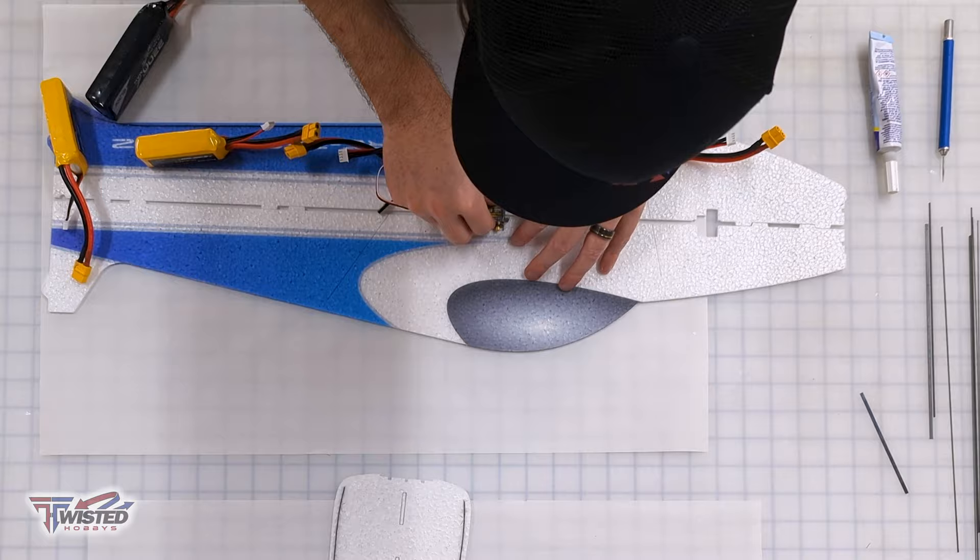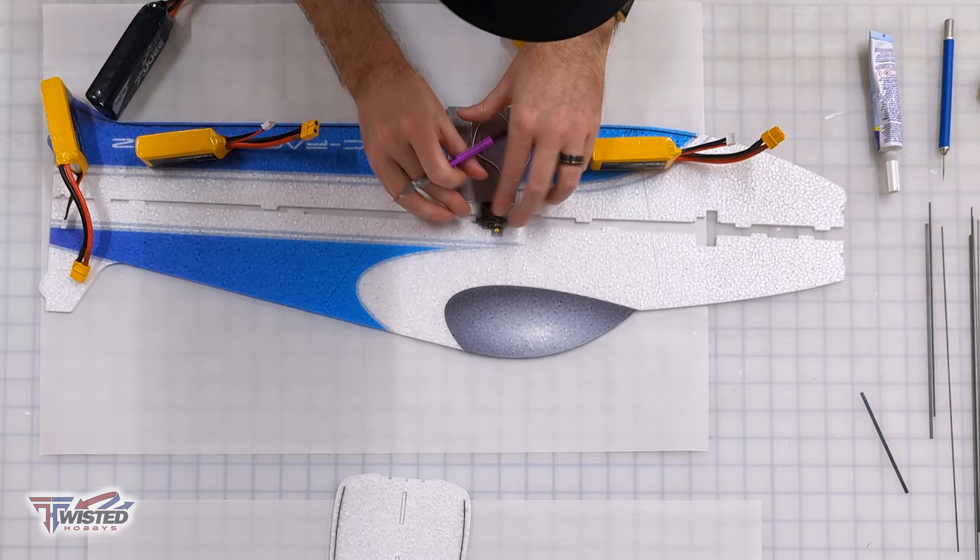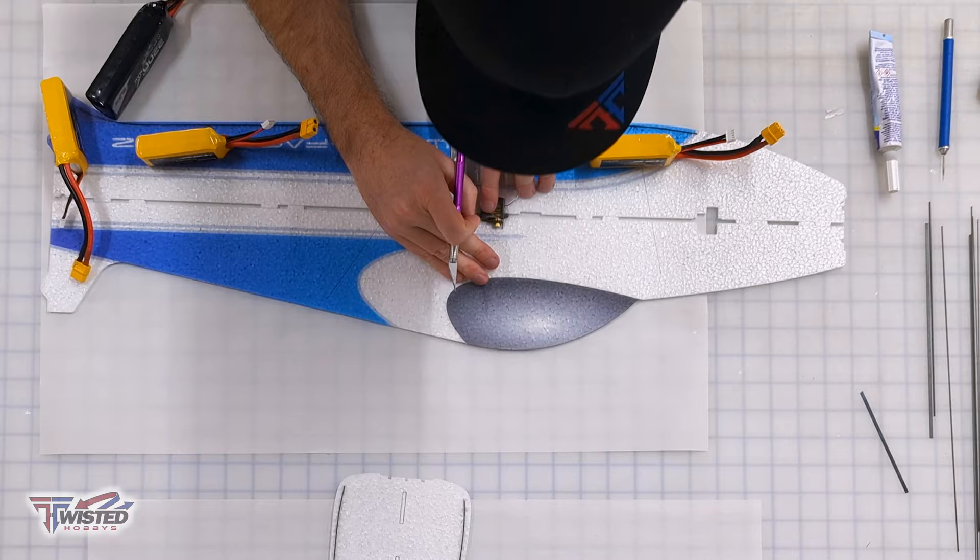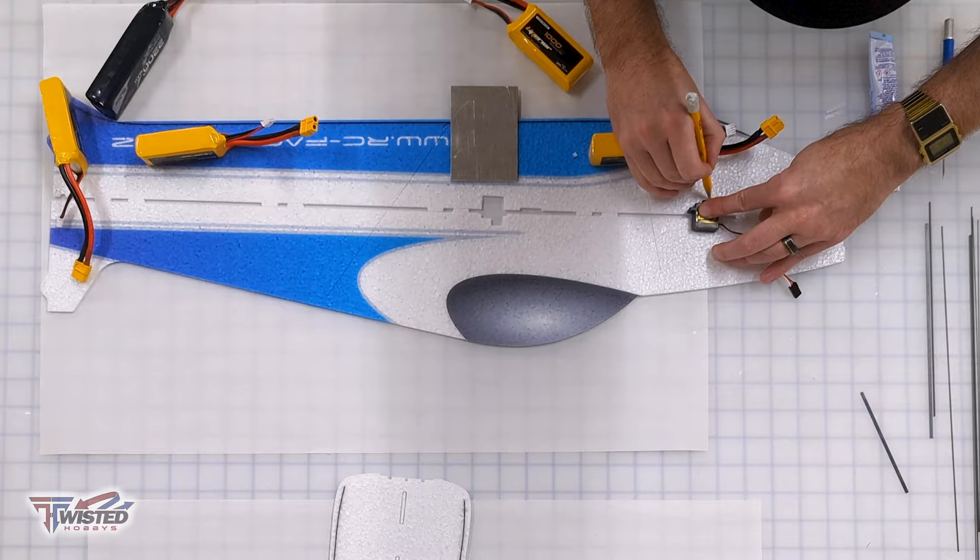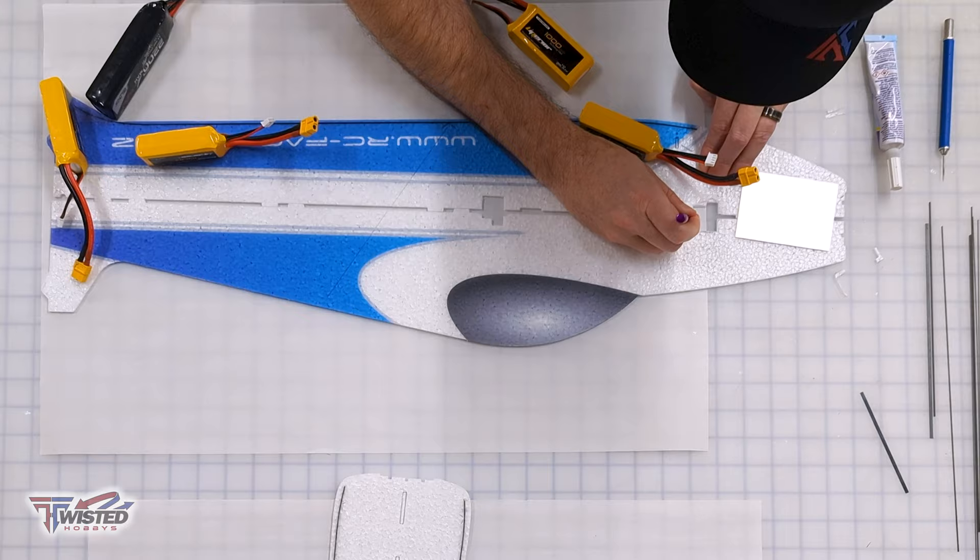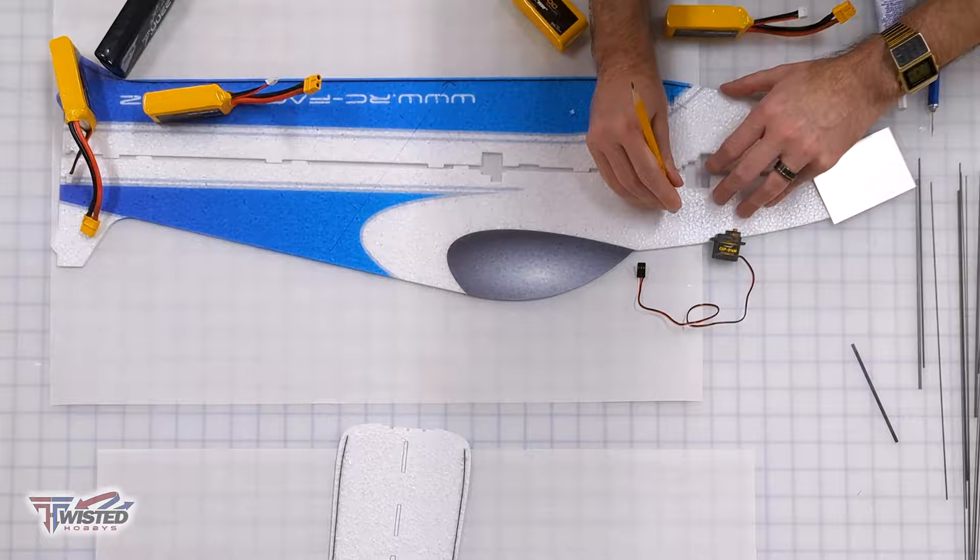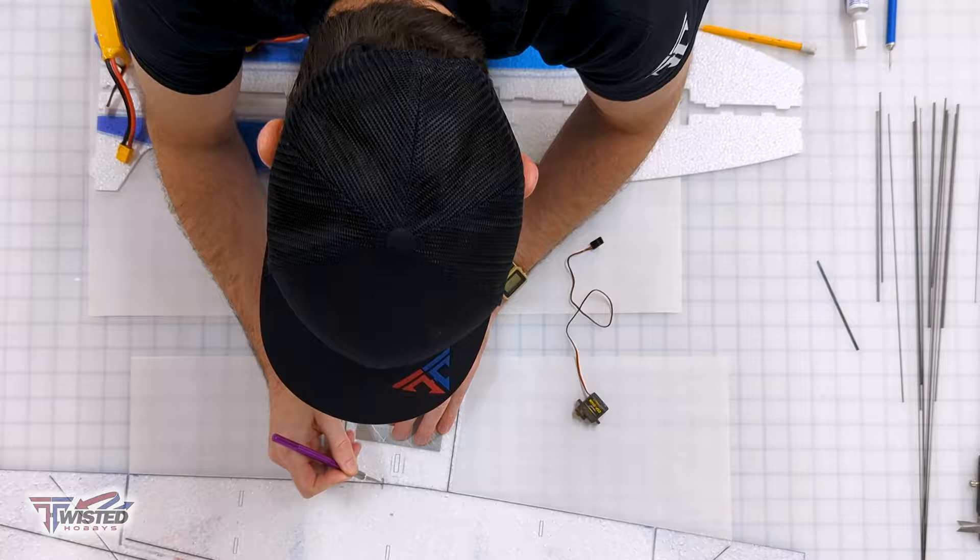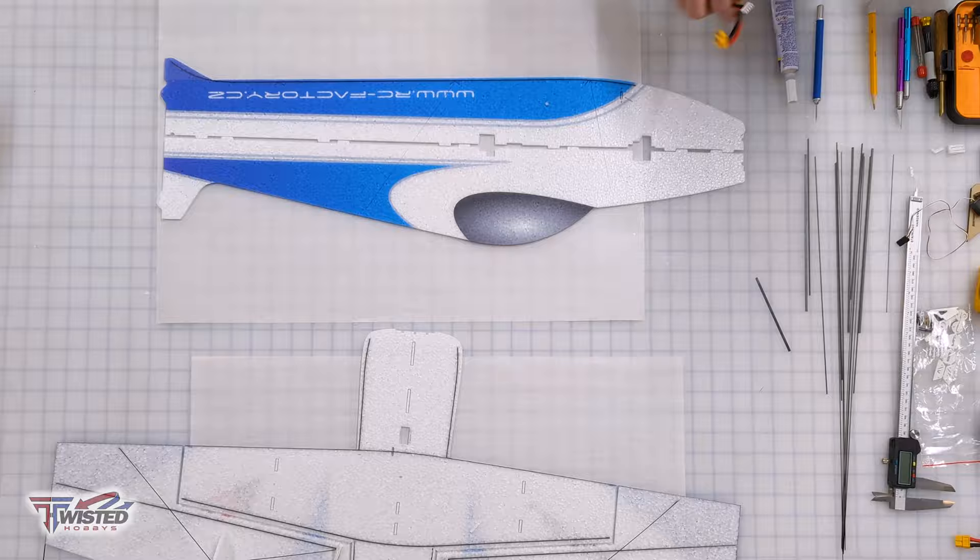I'm going to do the same thing with the servos for the vertical fuselage. Put it together and then figure out how big those servo pockets need to be, and then just cut them to size. This is much easier than trying to do it while the plane's together, because once it's three-dimensional, it's hard to get the exacto blade in there.